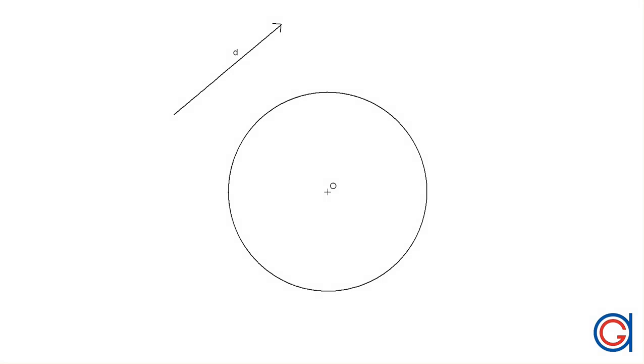Hello, today we are going to learn how to draw the two tangent lines to a given circle with a given direction vector d, as can be seen here on the screen.